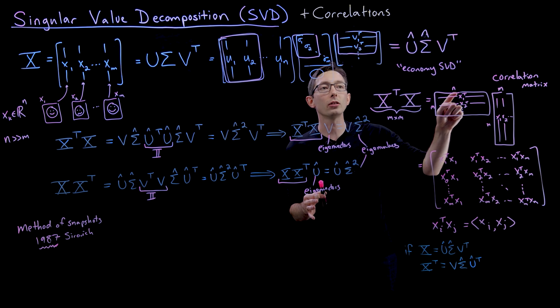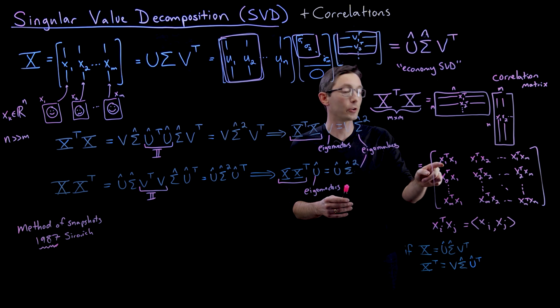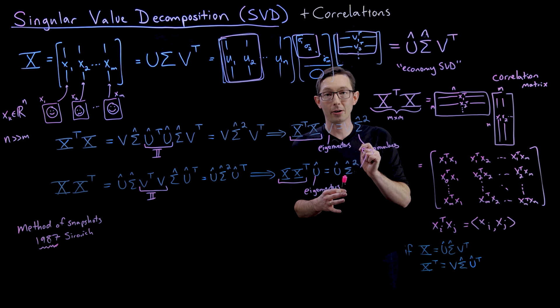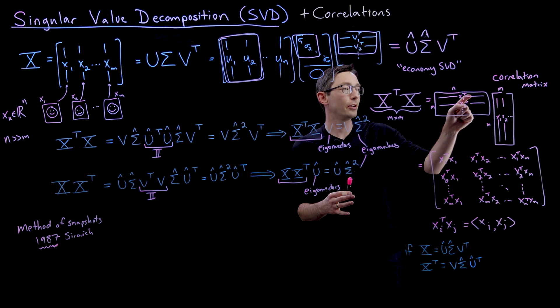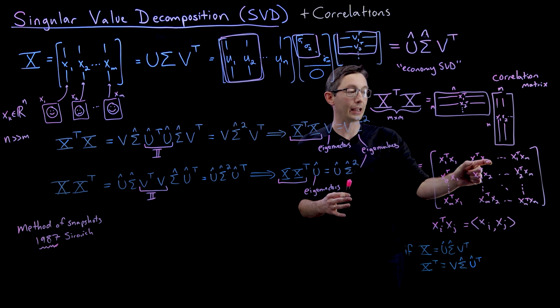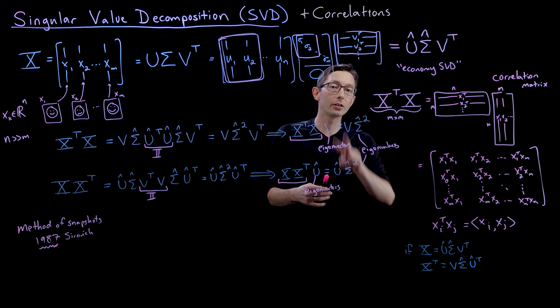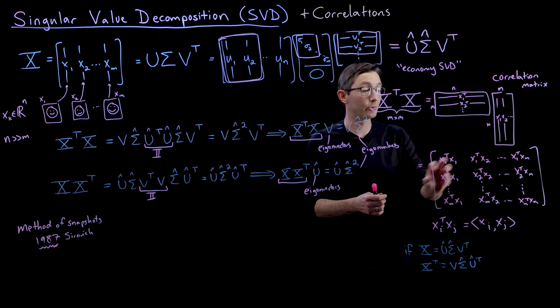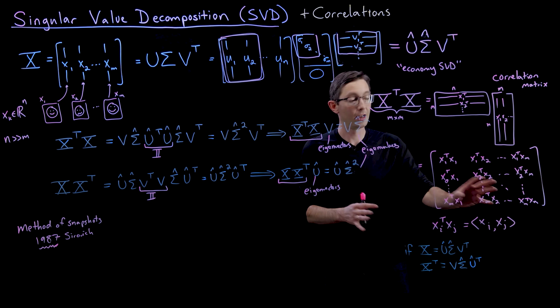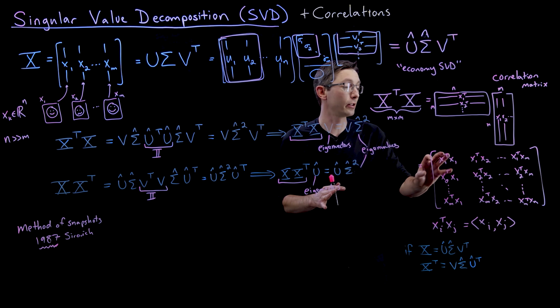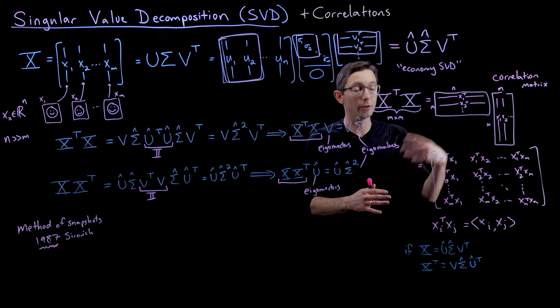If you can't load all of X into memory, you can load two columns at a time. Load the first column and take its dot product with itself, then the first column and the second column, and so on. If you can load two vectors into memory, you can compute this correlation matrix.